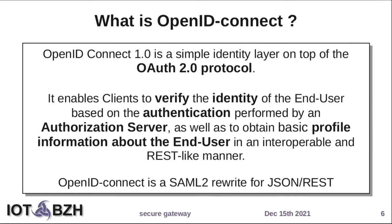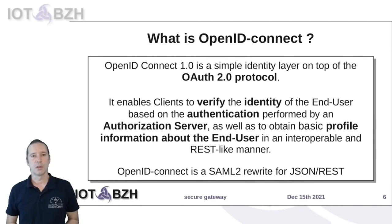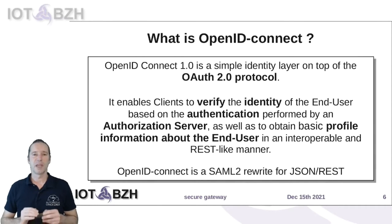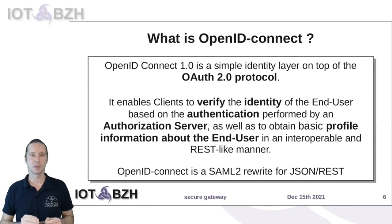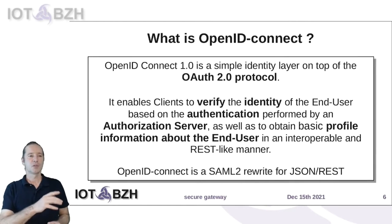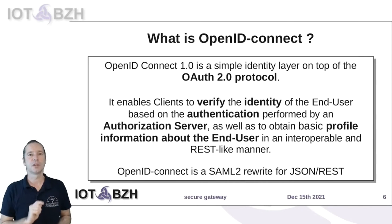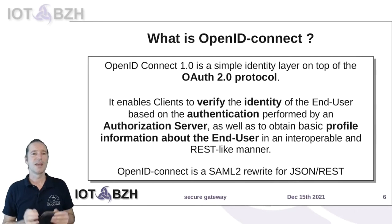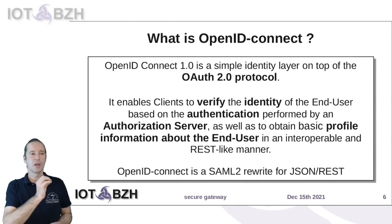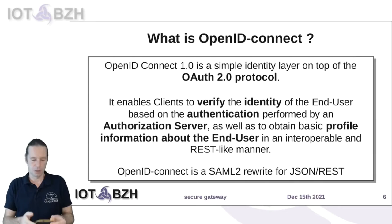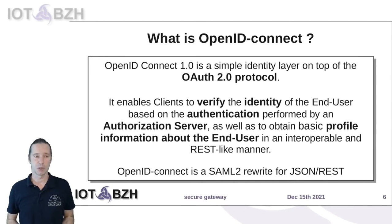OpenID Connect is a normalized protocol based on top of OAuth2, an authentication protocol also used internally by SecureGateway. It enables verifying the identity a user claims to have and getting some profile information, if possible. It is a protocol based on SAML2 but rewritten for JSON-REST, and is widely supported by major operators.